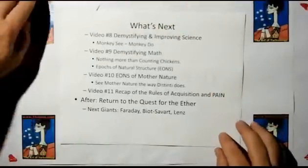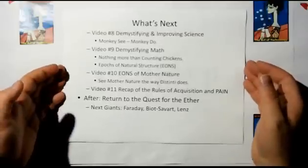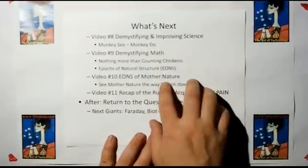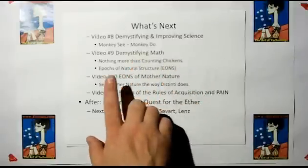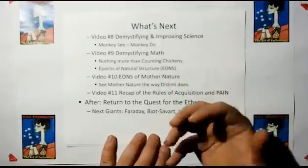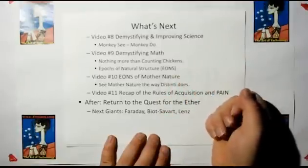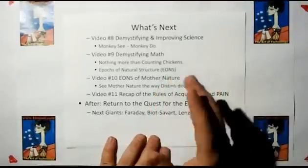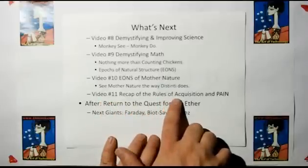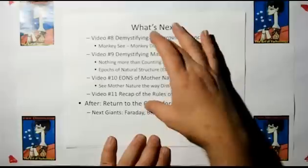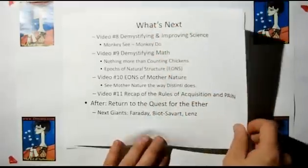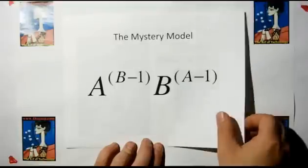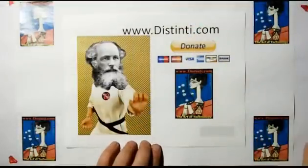So what's next? In video number 8, we're going to demystify and improve science — we're going to show that pretty much the science we're doing today is not much more evolved than monkey see, monkey do. We need to change that. Then we're going to demystify math. We're going to introduce the epochs of natural structure eons. Video number 10, we're going to use the eons of Mother Nature. Then we're going to recap all the rules of nature to date, plus the rules of pain. After the foundation series, we're going to go back into the quest for the ether. And by the way, the mystery model is A to the B minus 1, B to the A minus 1. If you could donate, I would really appreciate that. Thank you.